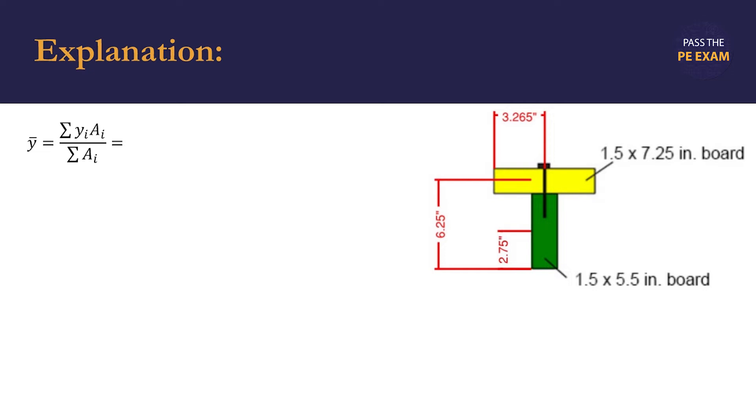We then substitute in our values for each section, sigma signifying that we need to sum the values for both sections. For the green section, y-sub-i is 2.75 inches, which is one half of the 5.5 inch height of the board. For the yellow section, this is 6.25 inches. We calculate the areas of these two sections. The green section is calculated by multiplying 1.5 inch by 5.5 inches, and the yellow section is calculated by multiplying 1.5 inch by 7.25 inches.